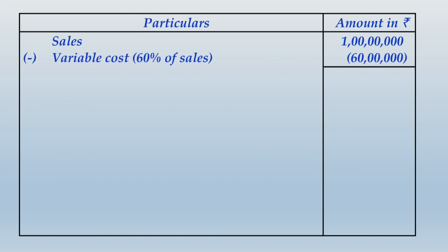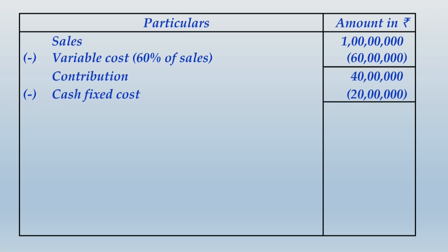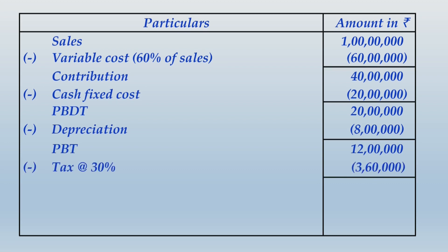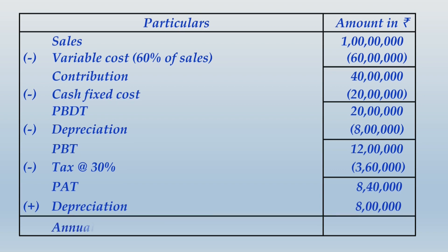Starting with sales of rupees 1 crore, less variable cost at 60% of sales = rupees 60 lakhs, giving contribution of rupees 40 lakhs. Subtract fixed cost other than depreciation — the cash fixed cost — of rupees 20 lakhs to get cash flows before tax (PBDT) of rupees 20 lakhs. Subtract depreciation of 8 lakhs to get profit before tax of 12 lakhs. Tax at 30% = rupees 3 lakh 60 thousand, so profit after tax = rupees 8 lakh 40 thousand.